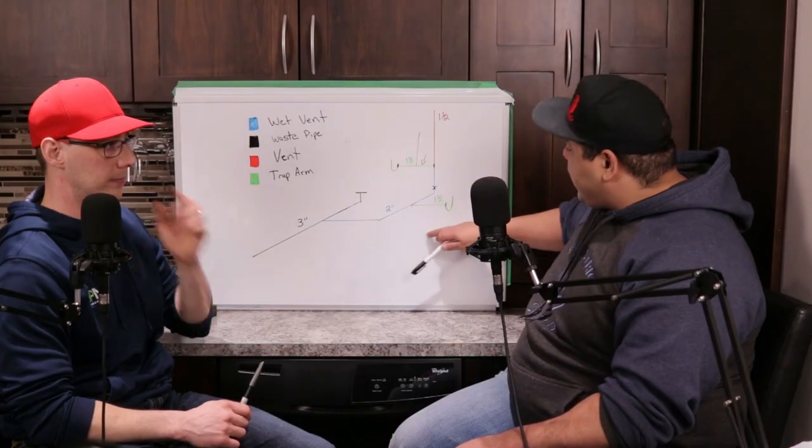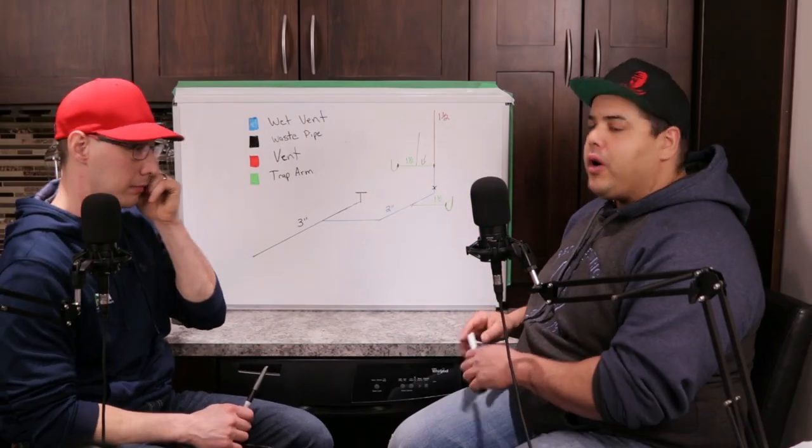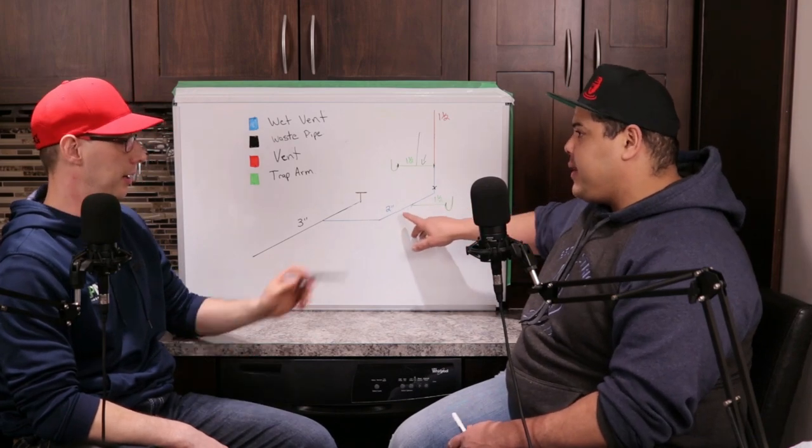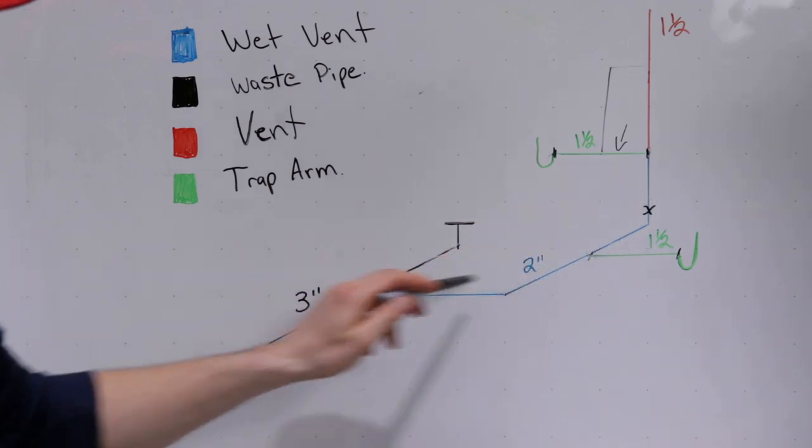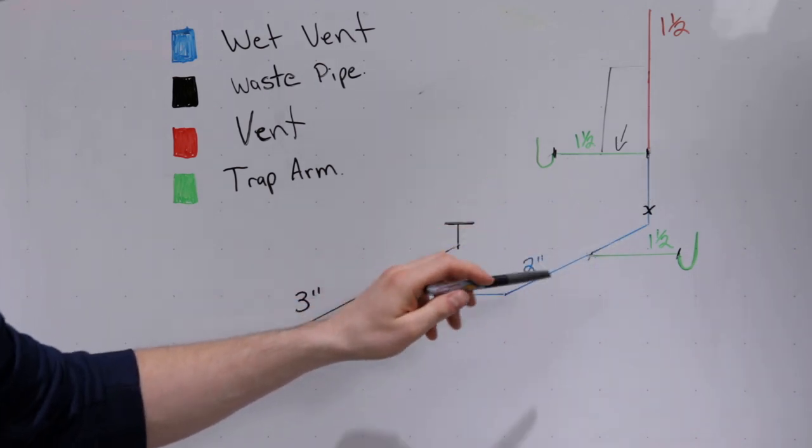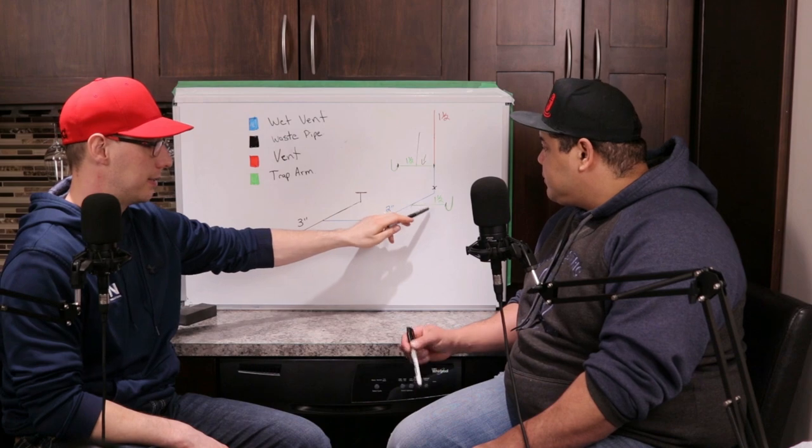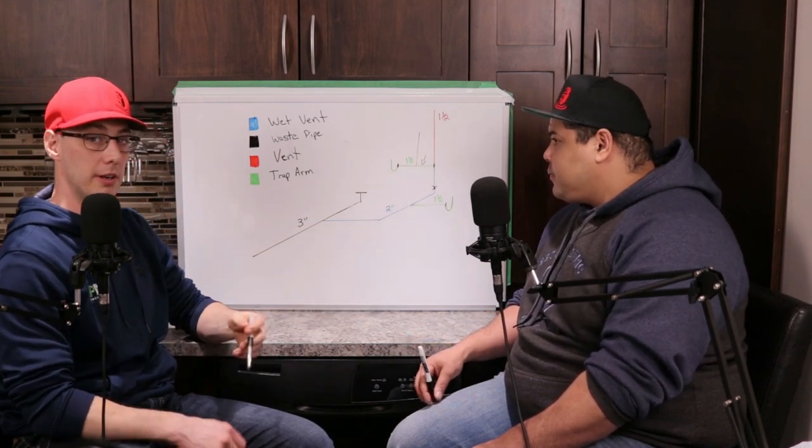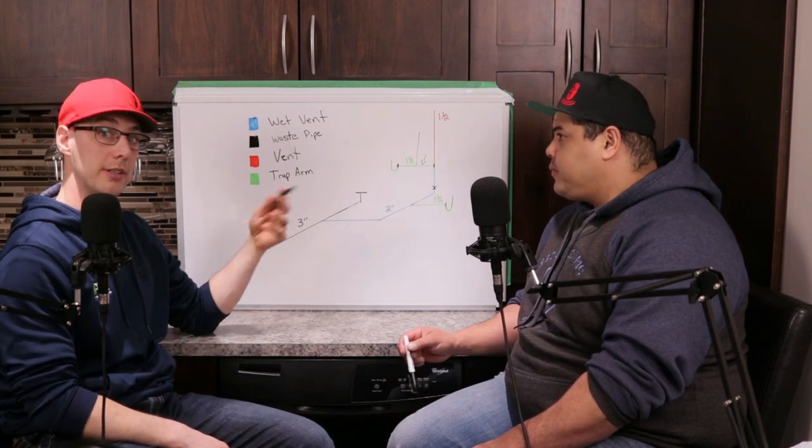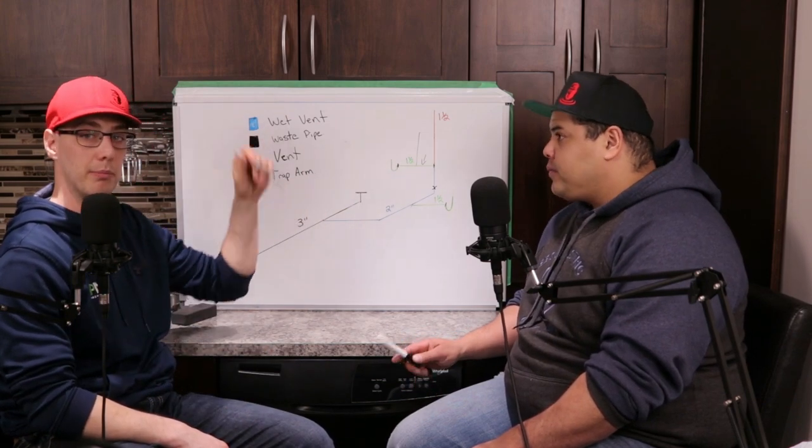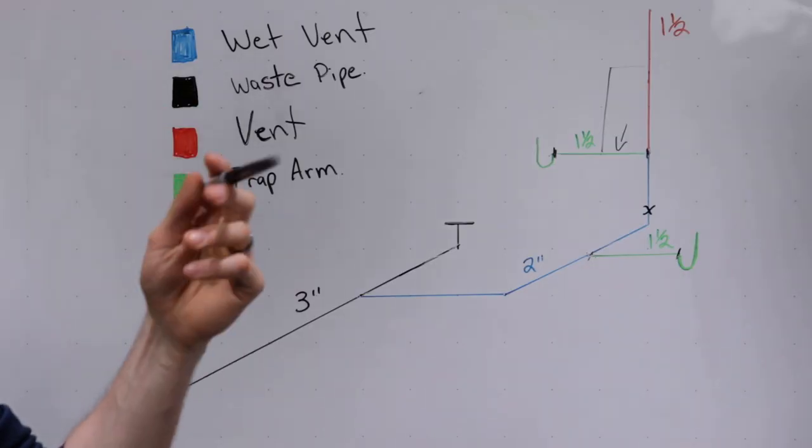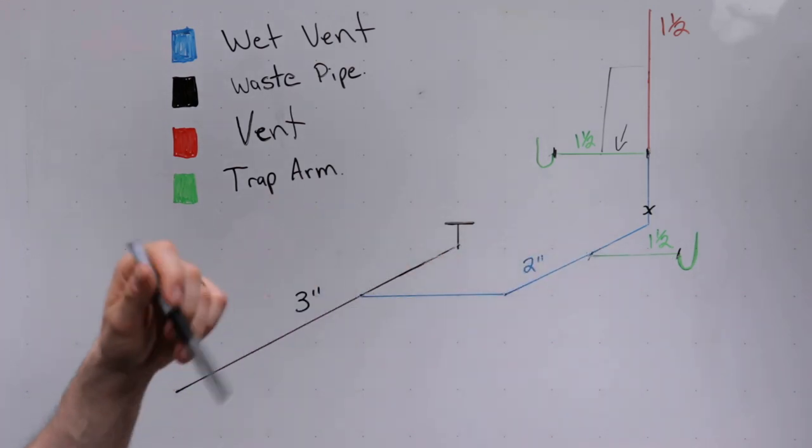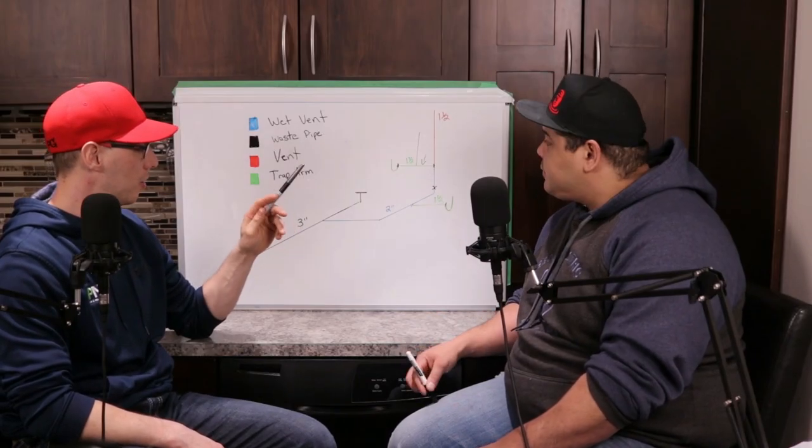You want to make sure that kind of dictates where this wet vent is. They can tie anywhere into here - it doesn't matter. You could tie this in here, here, here - it doesn't matter. That six foot distance is the most crucial point. You just want to make sure that when you're planning your plumbing out, to think about these things ahead of time, not just start putting Ys on and cutting. Then you're like, oh, my pipe's too far. It's very important to think about those numbers when you're in the planning stage of running your piping.